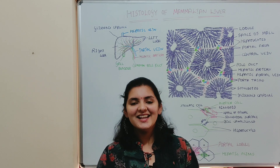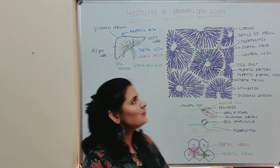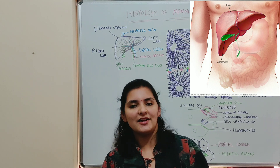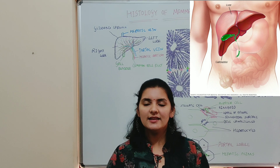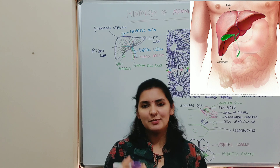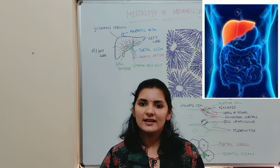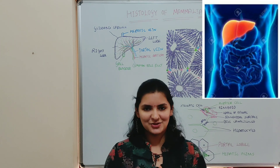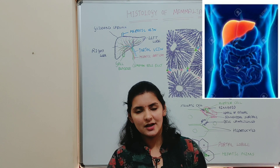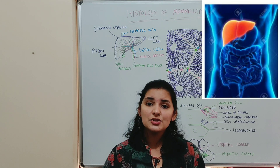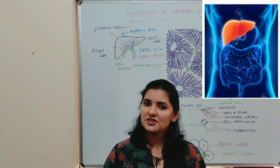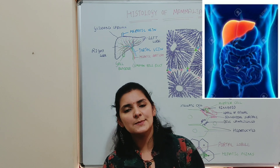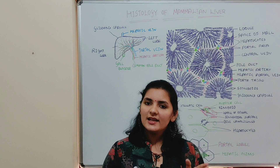Hi everyone, welcome back to my channel. In this video I'm going to talk about histology of mammalian liver. As you all know, liver is the largest gland, situated at the right side in the abdominal cavity just below the diaphragm. Liver is an exocrine gland; it secretes bile juice which is conveyed to the duodenum through a system of ducts. Apart from that, liver stores nutrients like glucose, lipid, vitamins, and ions, and it also detoxifies the harmful substances present in the blood.